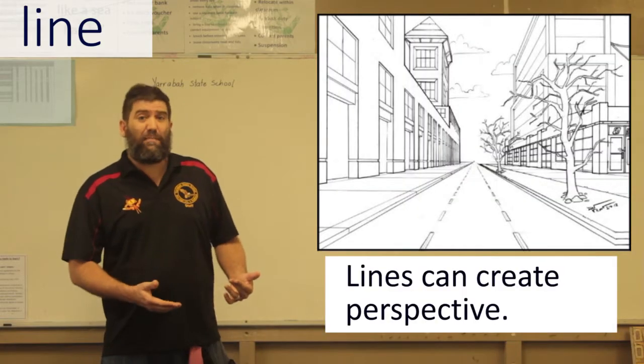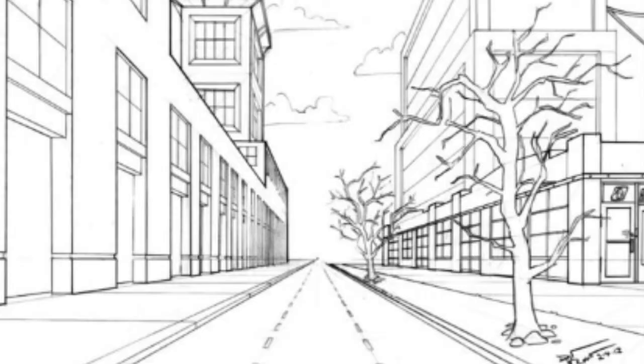Here's some perspective made out of lines. So even though this image is flat, it's two-dimensional, the artist has used lines cleverly to make the road appear like it's going off into the distance and to give this picture the illusion of three dimensions.